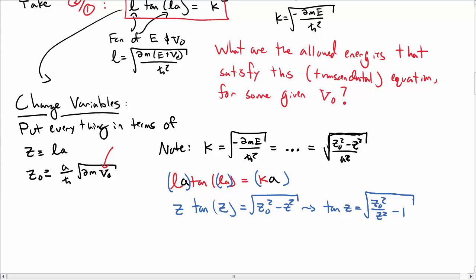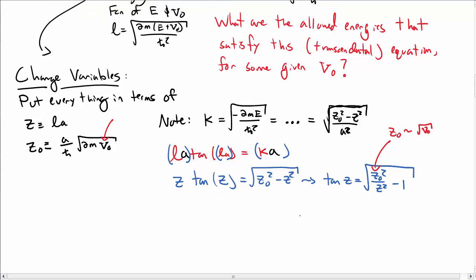I can adjust Z naught. Recall that Z naught goes like the square root of V naught, so I can pick different V naughts. The question we have to answer is: for a given depth of the potential well, which is controlled by Z naught, what values of Z solve this equation?